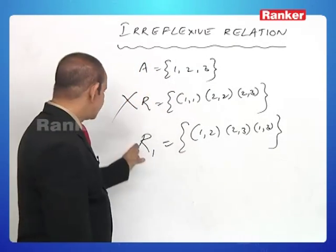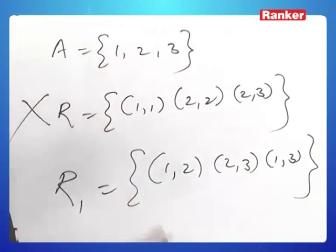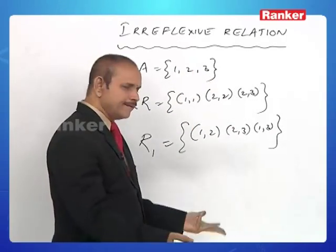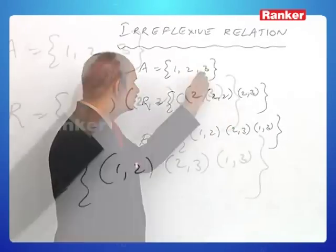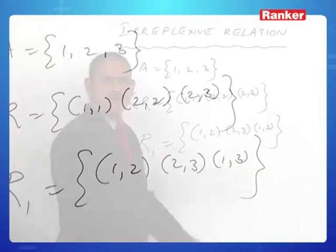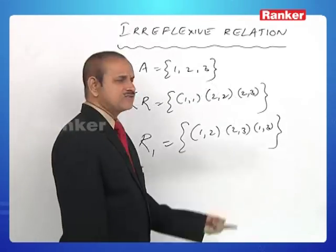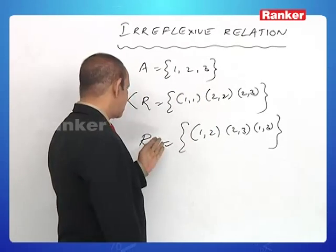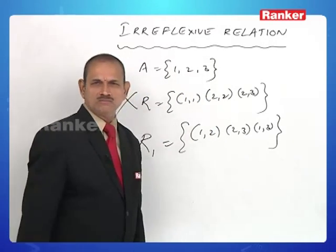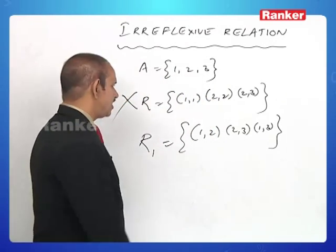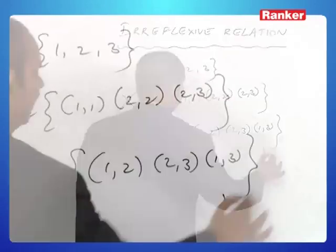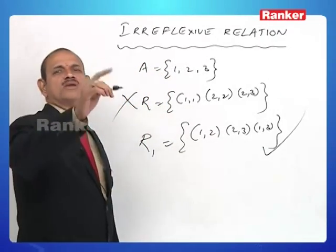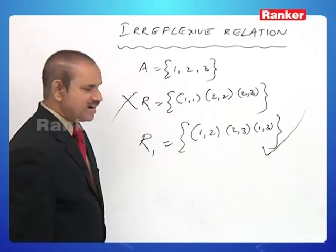What do you say about R1? (1,1) — no. (2,2) — no. (3,3) — no. Not even a single reflexive pair is present in R1. Such a relation is said to be irreflexive.